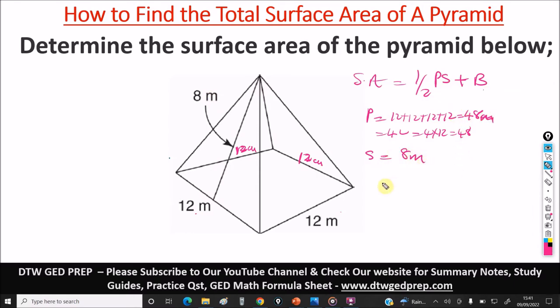And B means the base area. Here the base is a square. So the area of the square is L times L which is L squared. So that is 12 squared, 12 times 12, and that will give us 144 meter square. Sorry, meter square, not centimeter. I'm just used to the centimeter.